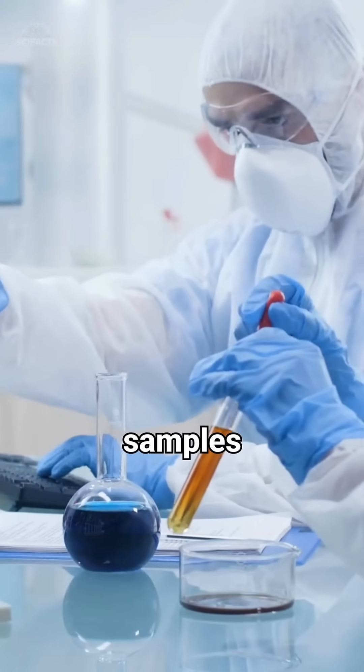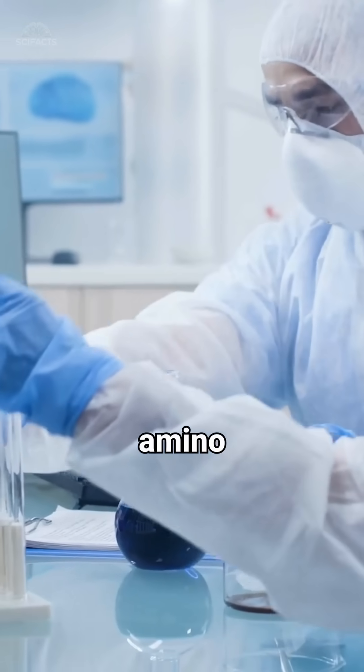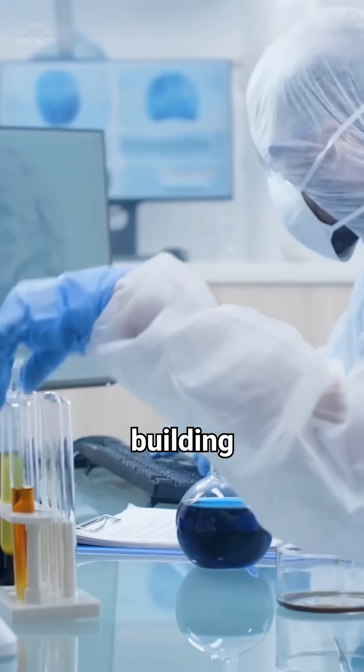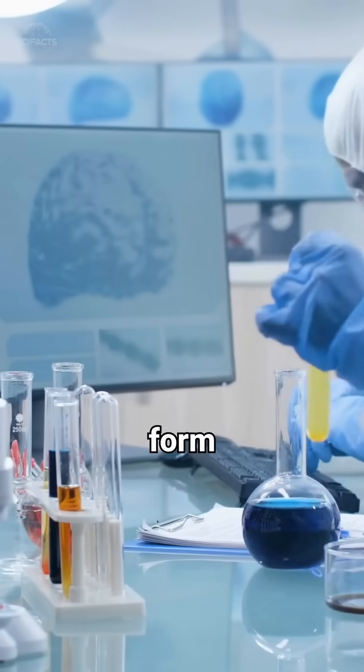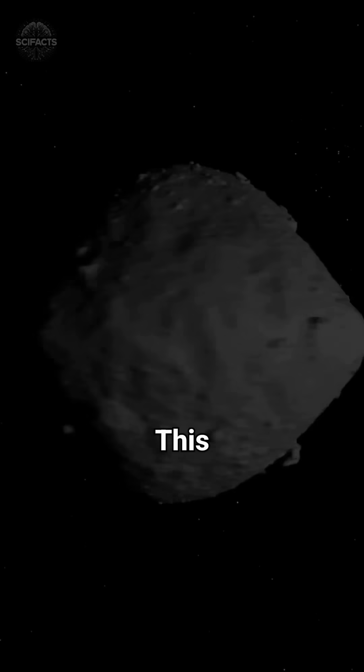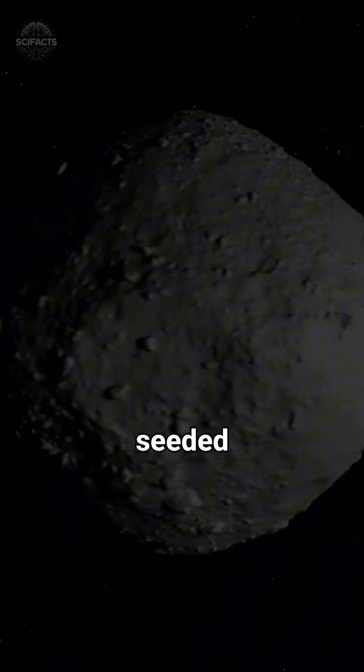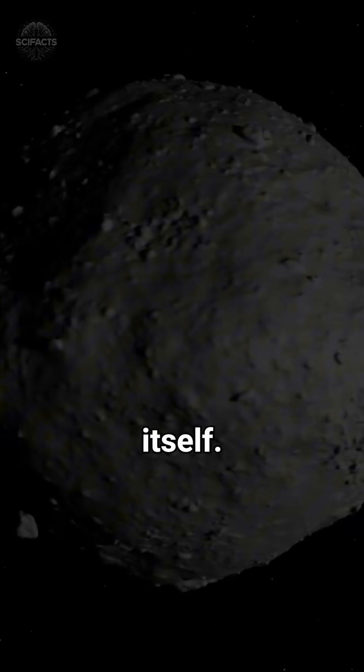Scientists analyzing the returned samples discovered 14 amino acids, the essential building blocks of proteins, along with all five nucleobases that form DNA and RNA. This suggests that asteroids like Bennu may have seeded Earth with the raw materials for life itself.